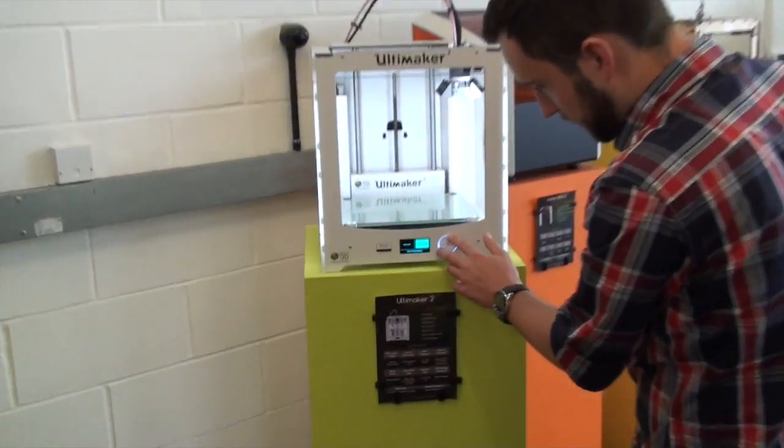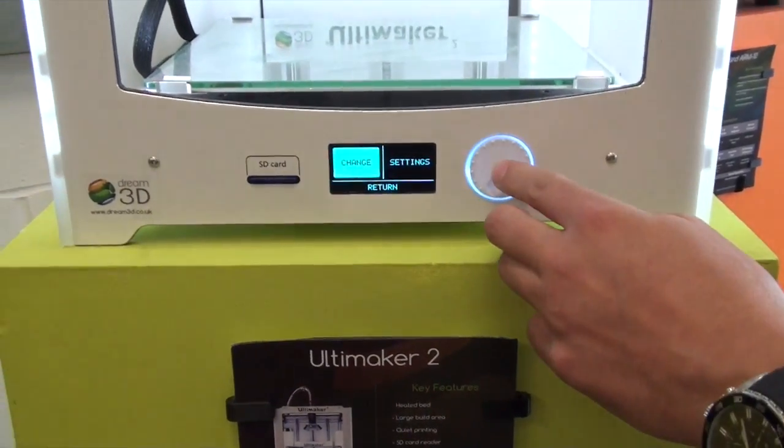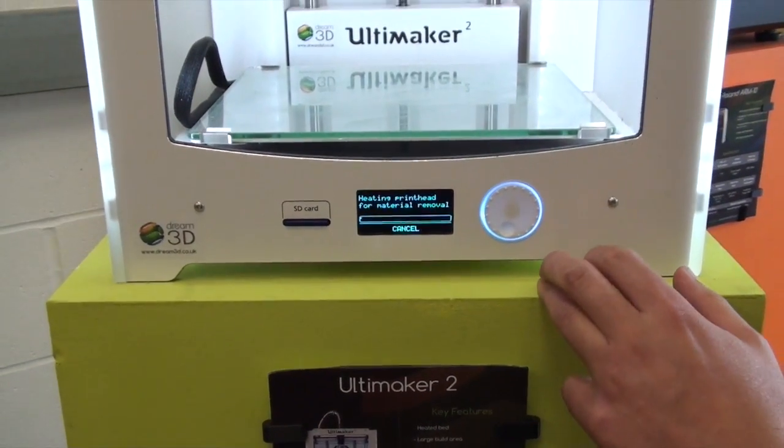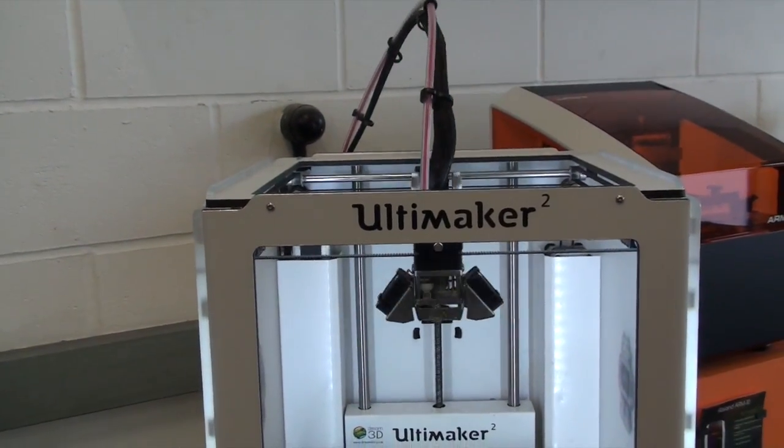OK, today we're going to show you how to change the filament on your Ultimaker 2. So, to start with, you just want to go into the menu and select material, then change, and at this point it will start heating up and getting ready to eject.